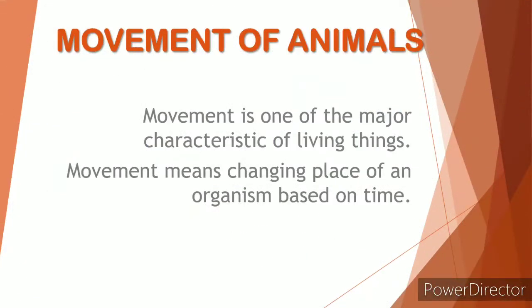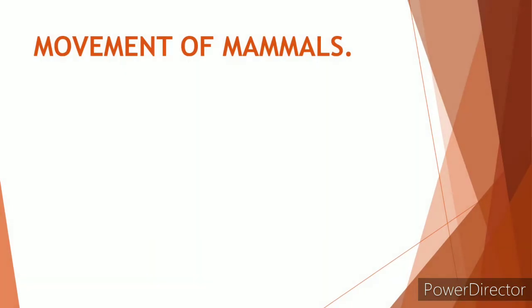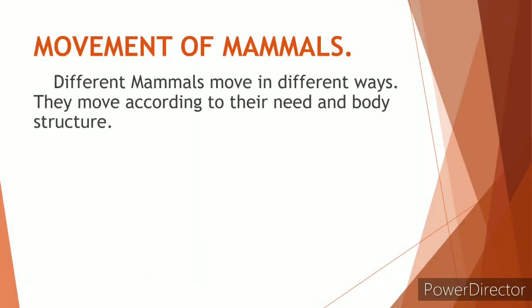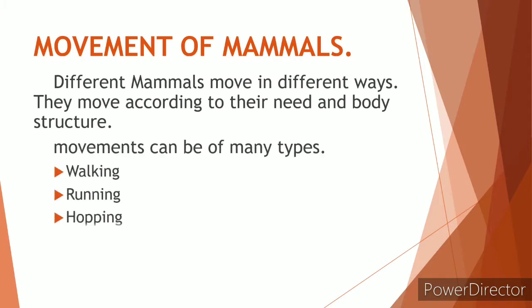Movement is one of the main key features of a living thing. Movement of mammals. Different mammals move in different ways according to their body structure and their need. Let's see some movements which we can find in mammals. They are walking, running, hopping, swimming, flying and crawling.